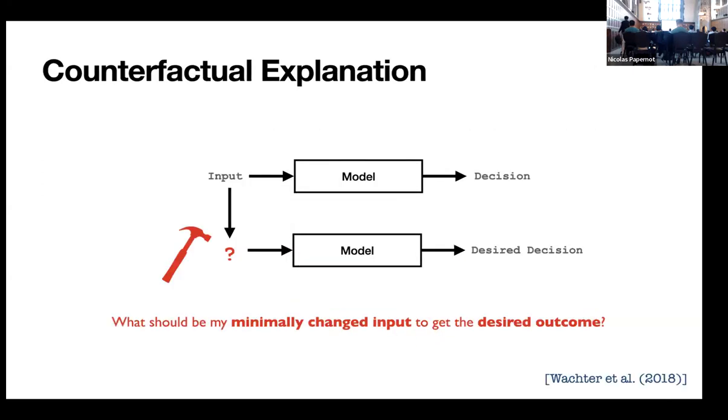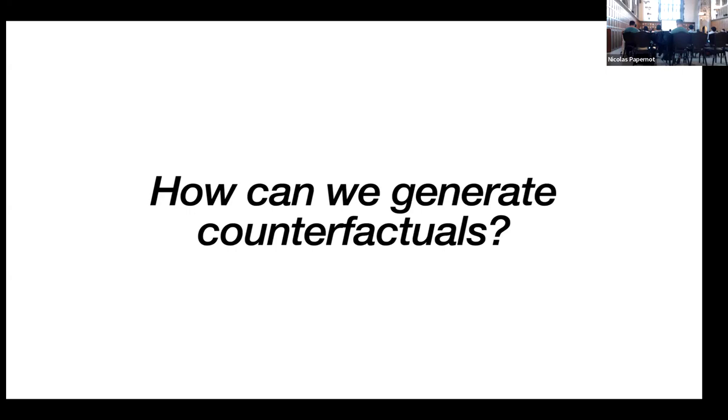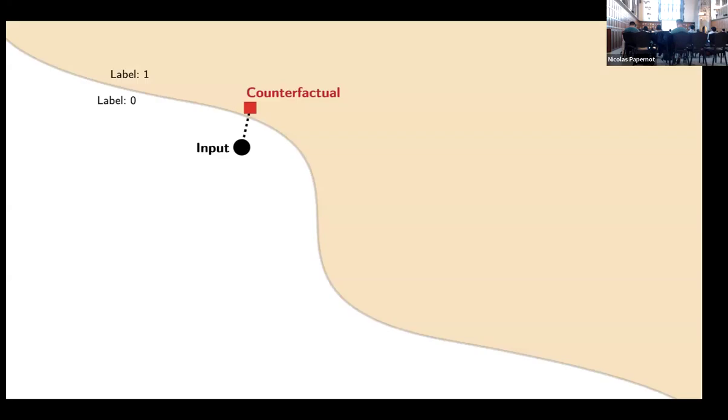One way that people have tried to solve this is by generating counterfactual explanations. What is a counterfactual explanation? Given an input, you give that input to a model, you get a certain decision. A counterfactual explanation is the minimal change that I can do in my input in order to obtain a desired decision. If I refer to the above example, the desired decision was that my loan should get approved and the decision was that it got rejected. So what should I change in my input attributes in order to get the desired outcome? And our work contributes to that.